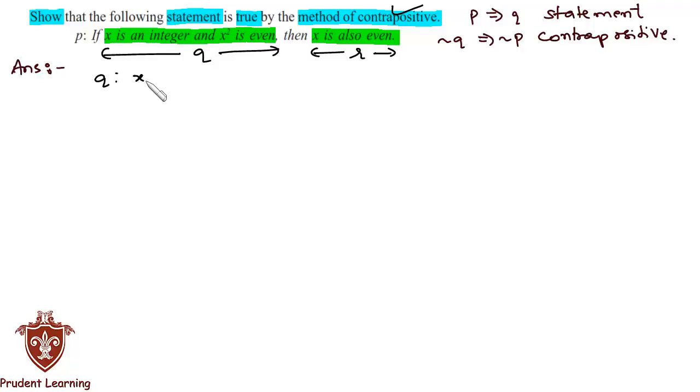So we have q as: x is an integer and x² is even. And the second component statement r is: x is even. This simply means q implies r, and we note that the contrapositive of this would be negation r implies negation q.